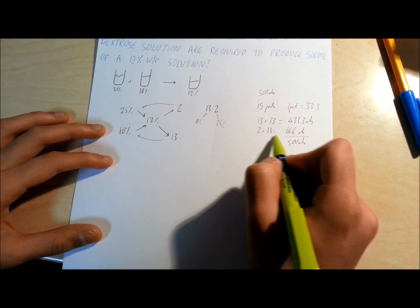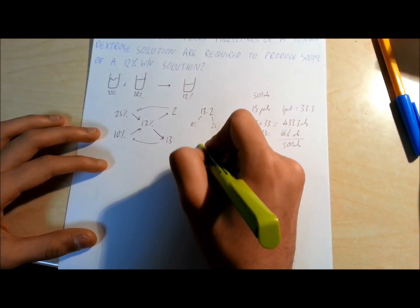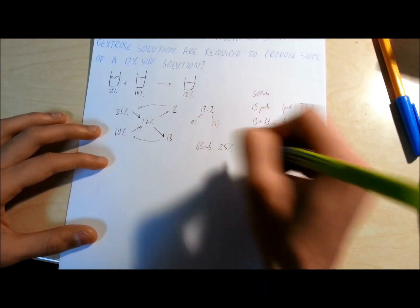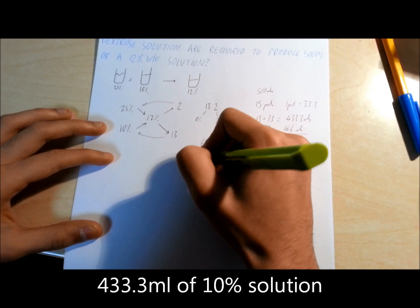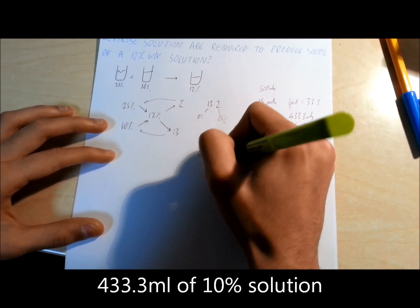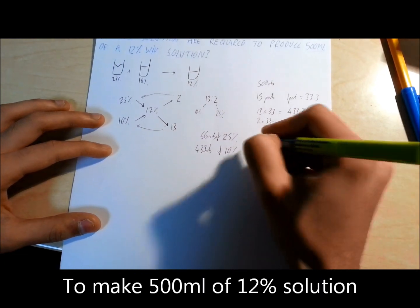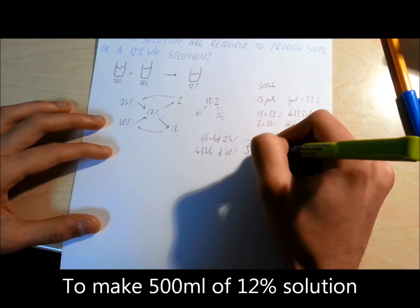So you need 66 mils of the 25% solution and 433 mils of the 10% solution to make your 12% solution.